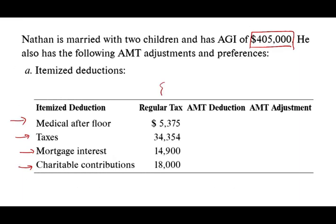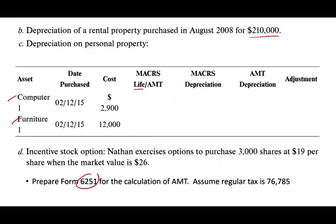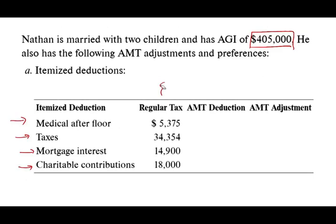Let's go step by step. We have to complete a Form 6251 calculation for AMT. They may give you an actual form or drop-down boxes. First, let's look at the itemized deductions — we need to know what's deducted for regular tax versus AMT and what adjustments to make. The first thing we do when computing AMT is compute regular taxable income. We are given adjusted gross income and must derive regular taxable income.